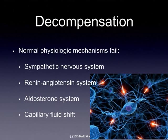Ischemia or myocardial infarction is the most common reason why somebody would develop heart failure. As a result of the heart failing and having decreased cardiac output, normal physiologic mechanisms kick in that try to maintain our cardiac output. When those normal mechanisms fail, we start to get systemic mechanisms working in the body, like the sympathetic nervous system, the renin-angiotensin system, and aldosterone.